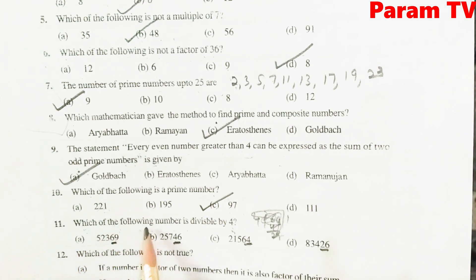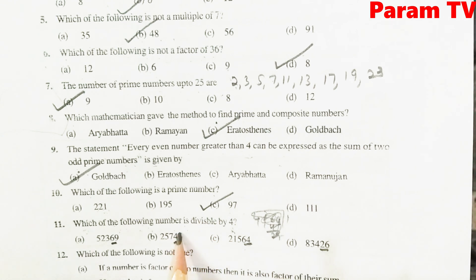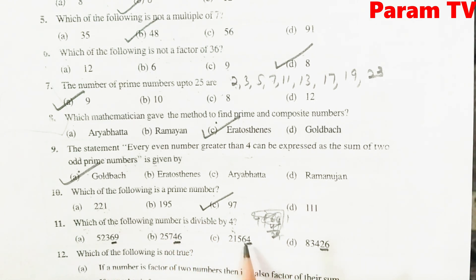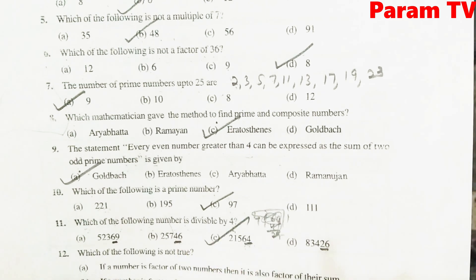Which of the following number is divisible by 4? Divisible by 4 के लिए last two digits को check करना होता है. 64 ही 4 से divide होता है. C is the right option.